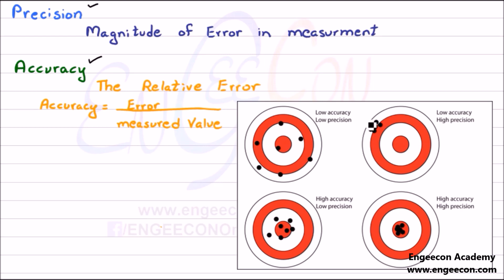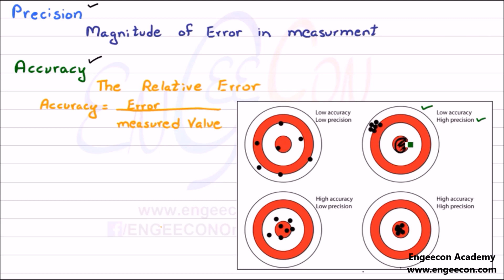Let me explain it with the help of this figure. Precision is how close your measurements are with each other. For example, you have this target board and you have to target the main area. Precision is how close your measurements are to each other, and accuracy is how close your measurements are with respect to this main target. In this case, your readings are close to each other, meaning there is high precision.